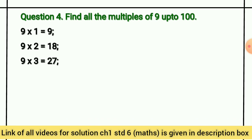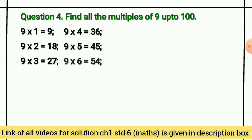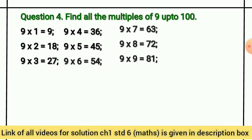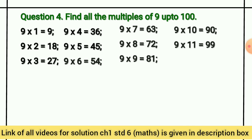Question number 4: Find all the multiples of 9 up to 100 — यानि कि हमें 9 के multiples को find करना है 100 तक। 100 के आगे हमें नहीं जाना है। तो हम क्या करेंगे — हम पहले 9 का table लिखेंगे: 9×1=9, 9×2=18, 9×3=27, 9×4=36, 9×5=45, 9×6=54, 9×7=63, 9×8=72, 9×9=81, 9×10=90। अब 9×11=99 — 99 मिल गया। अब 9×12 का answer 100 से ऊपर हो जाएगा, लेकिन हमें यहां 100 तक के ही multiples चाहिए, जो हमें मिल गए।